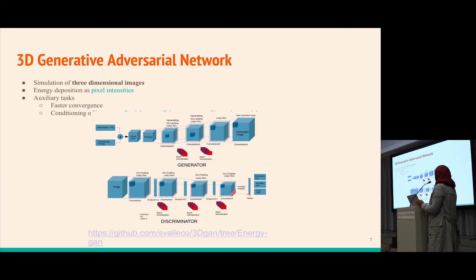We use the discriminator to differentiate between images simulated by our generator and images from Geant4 data. We train the generator to minimize, so the discriminator gets confused between the generated images and real data. This allows the generator to learn implicitly all the properties of our dataset.